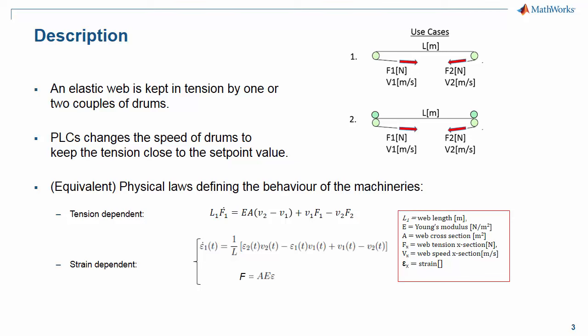In particular, I want to explain a bit about units and parameters you find in these equations. We have L which is the web length. We have E which is the Young's modulus and is representative of the elasticity of the web material. We have the cross-section of the web material, the web tension expressed as a force in Newtons, the web speed, and then we have the strain which is unitless.